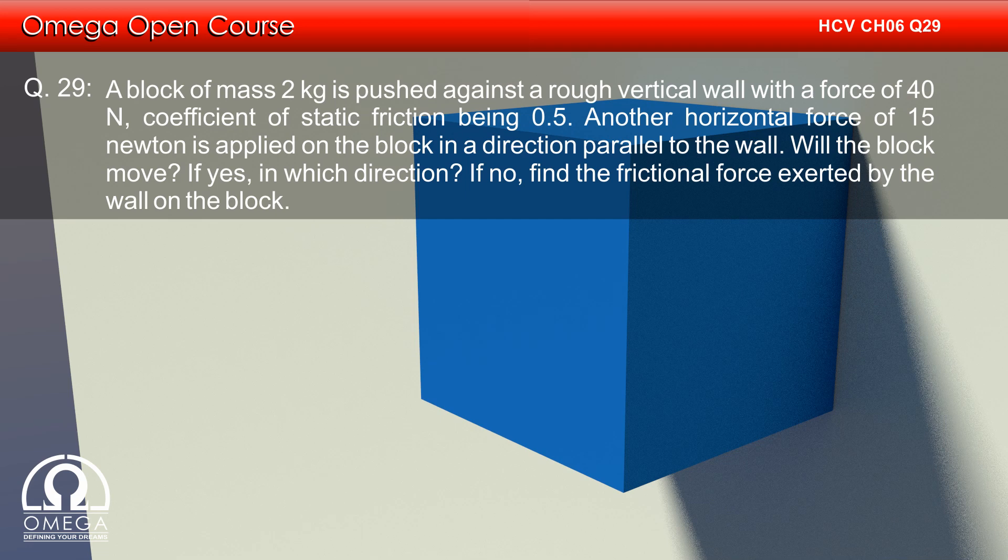A block of mass 2 kg is pushed against a rough vertical wall with a force of 40 N, coefficient of static friction being 0.5. Another horizontal force of 15 N is applied on the block in a direction parallel to the wall. Will the block move? If yes, in which direction? If no, find the frictional force exerted by the wall on the block.